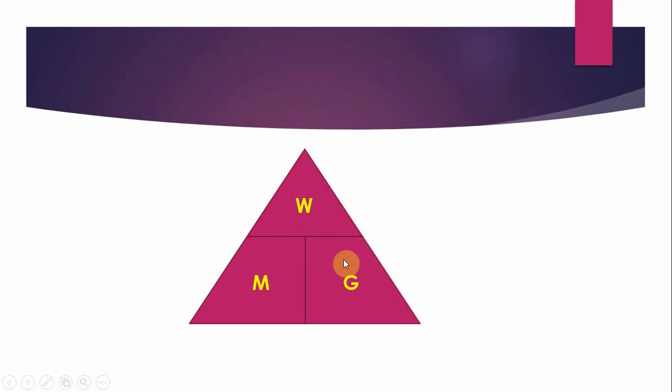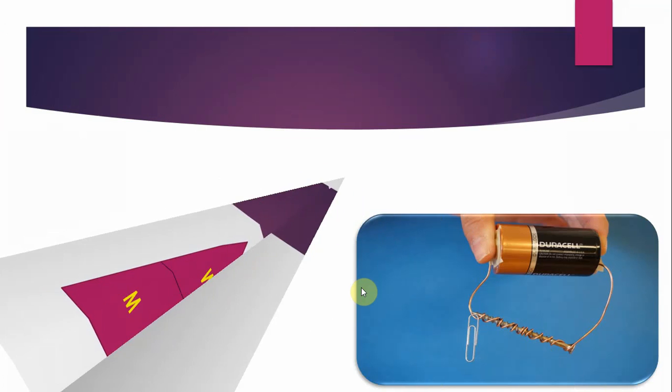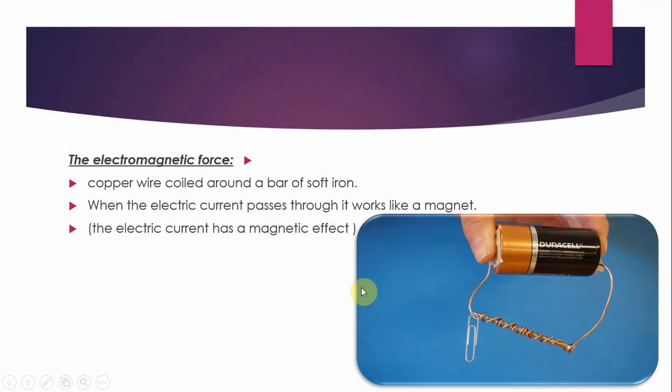The second part of this lesson is talking about the electromagnetic force. You talked in Grade 4 about how to do the electromagnet. Simply we use a battery connected with the electric wires and the iron nail and copper coil around it. So the iron nail becomes a temporary magnet, and this proved that the electric current has a magnetic effect.